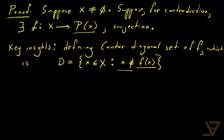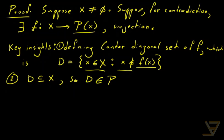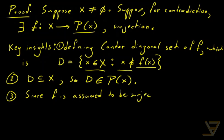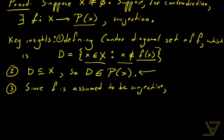Notice that D is a subset of x, because we defined it as elements of x. So D is an element of the power set of x. Since f is assumed to be surjective, that means some element hits D, since D is an element of p of x. Formally, there exists a y in capital X such that f of y is equal to D.